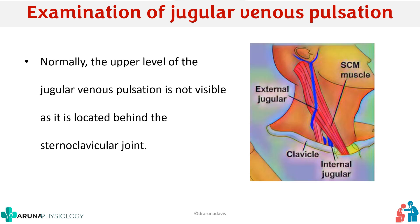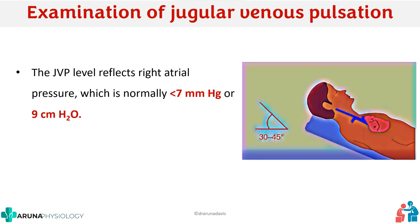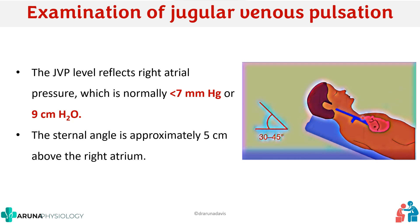Normally the upper level of the jugular pulse is not visible; in a normal subject you will not see a visible jugular venous pulsation because it is located behind the sternoclavicular joint. If it is elevated, you will be able to see that pulsation in the vein. The sternal angle is approximately 5 centimeters above the right atrium, so if the measured height is, say, 6 cm, then the JVP would be 5 plus 6 equals 11 centimeters of water.